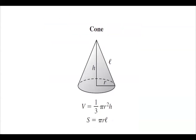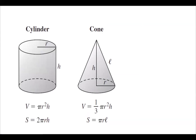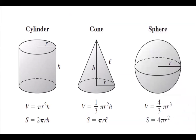If you have a cone, the volume is (1/3)πr²h and the surface area is πrl. If you have a cylinder, the volume is πr²h and the surface area is 2πrh, given that it is open. For a sphere, the volume is (4/3)πr³ and the surface area is 4πr². These are the objects from algebra and pre-calculus — we're now going to deal with other types of solids and calculate their areas.